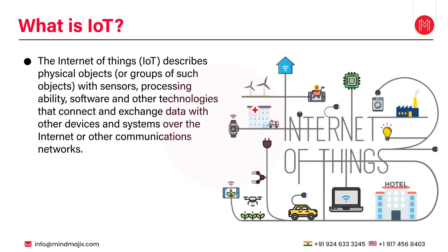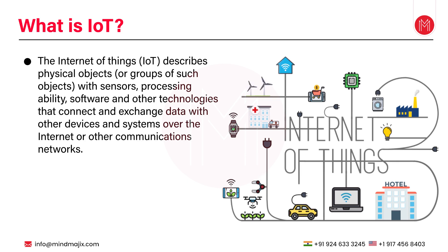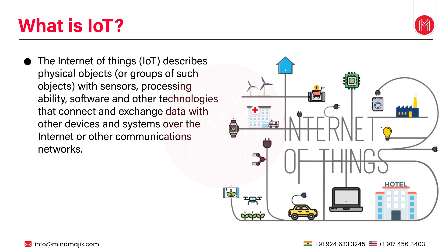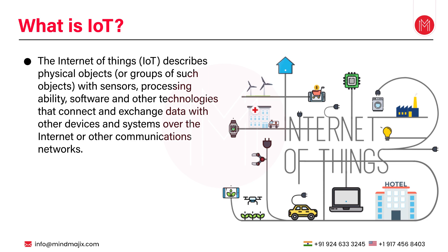IoT or Internet of Things describes physical objects or a group of such objects with sensors, processing ability, software and other technologies that connect and exchange data with other devices and systems over the internet or some other communication network. In simple words, IoT is collecting and exchanging data among the network of connected devices to make better decisions. The devices that can be used in IoT can include simple domestic items as well as advanced technological instruments. IoT is an advanced technology that makes our lives simpler and happier. According to experts, more than 22 billion devices will be connected by IoT by the year 2025.